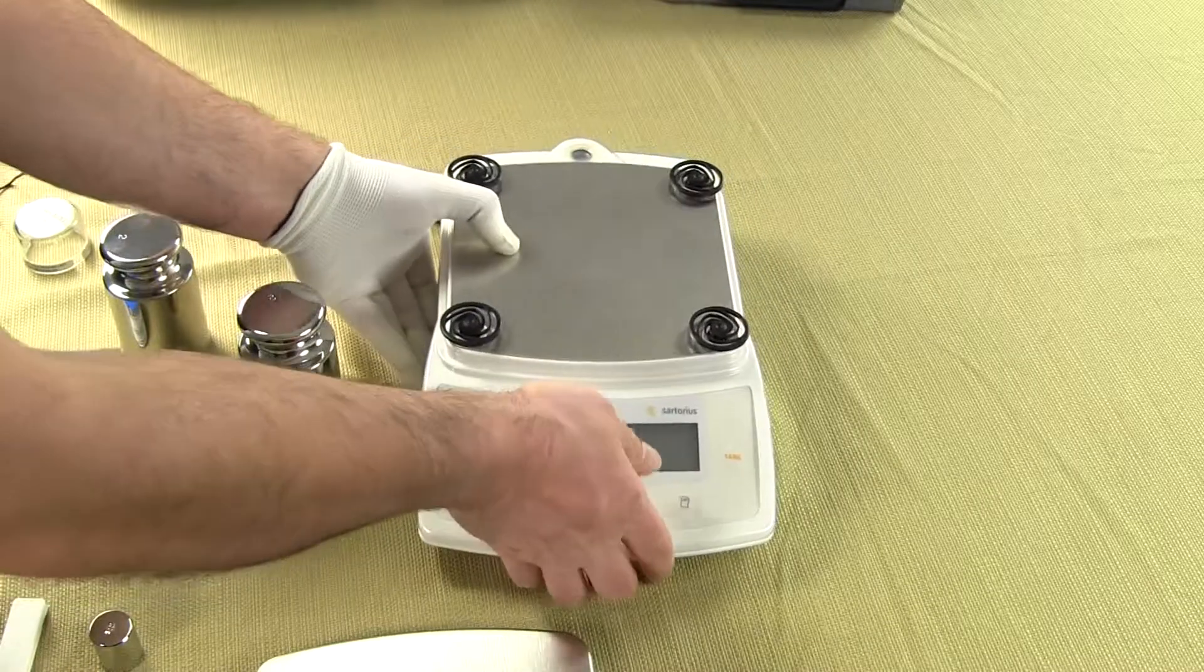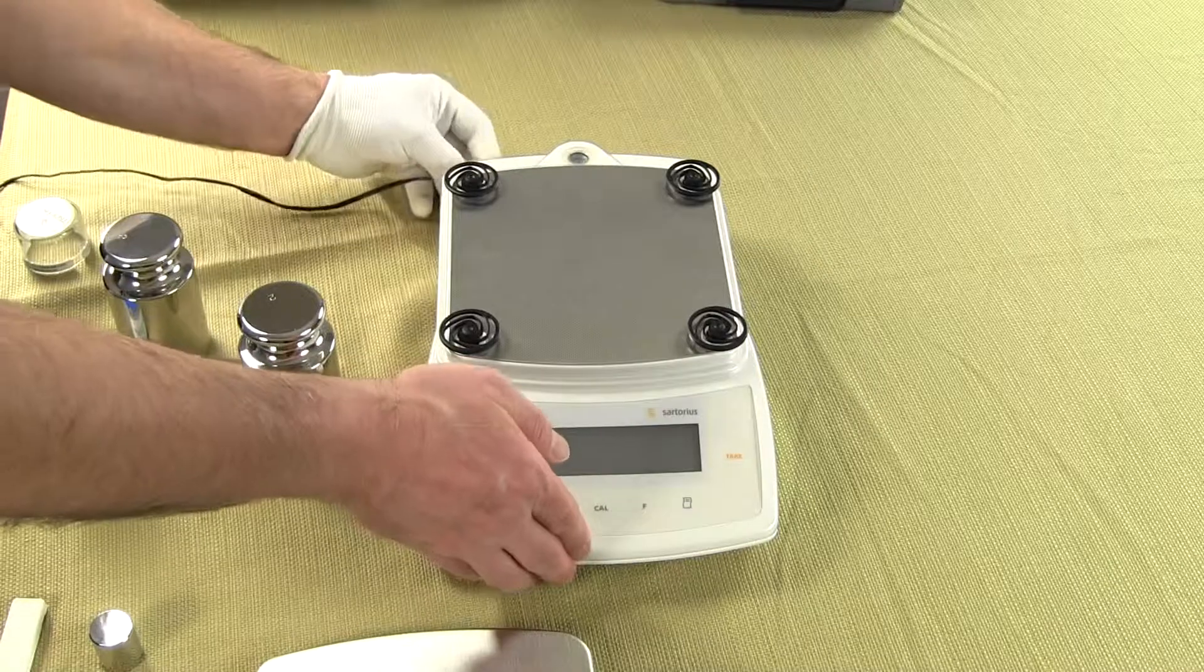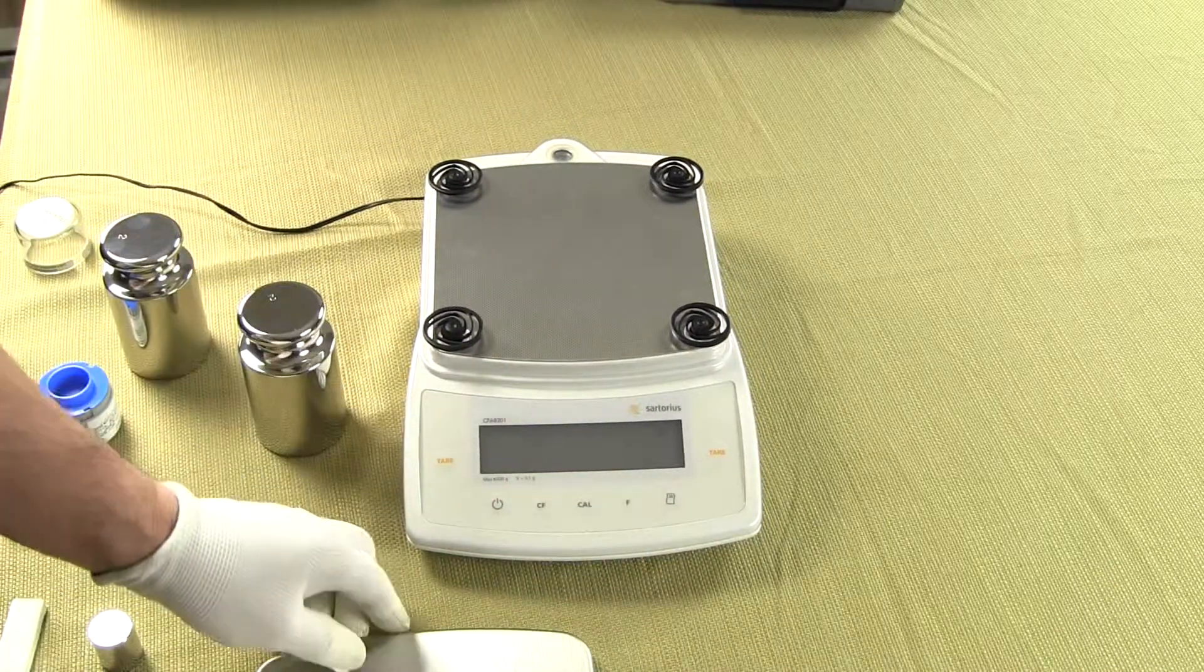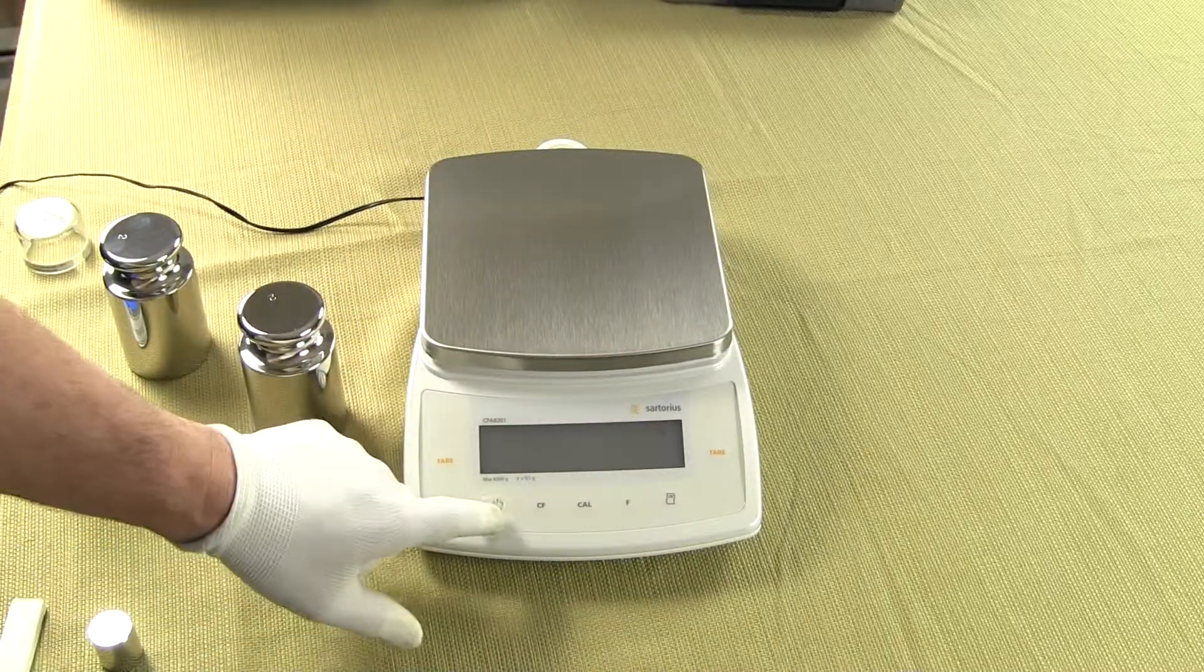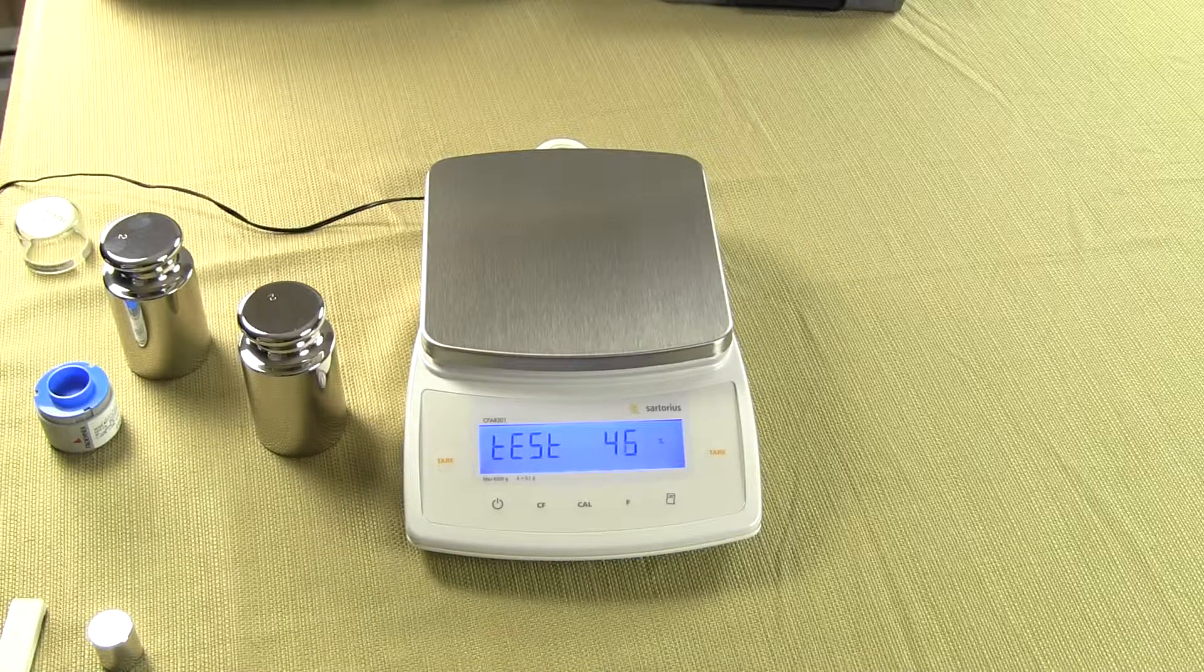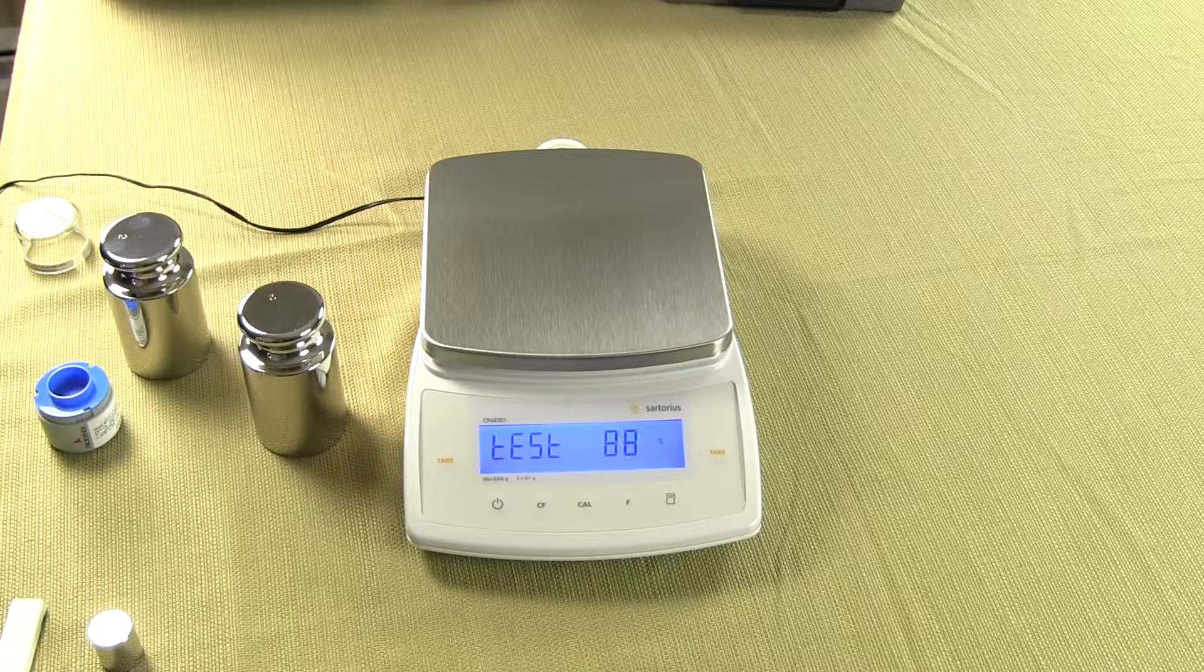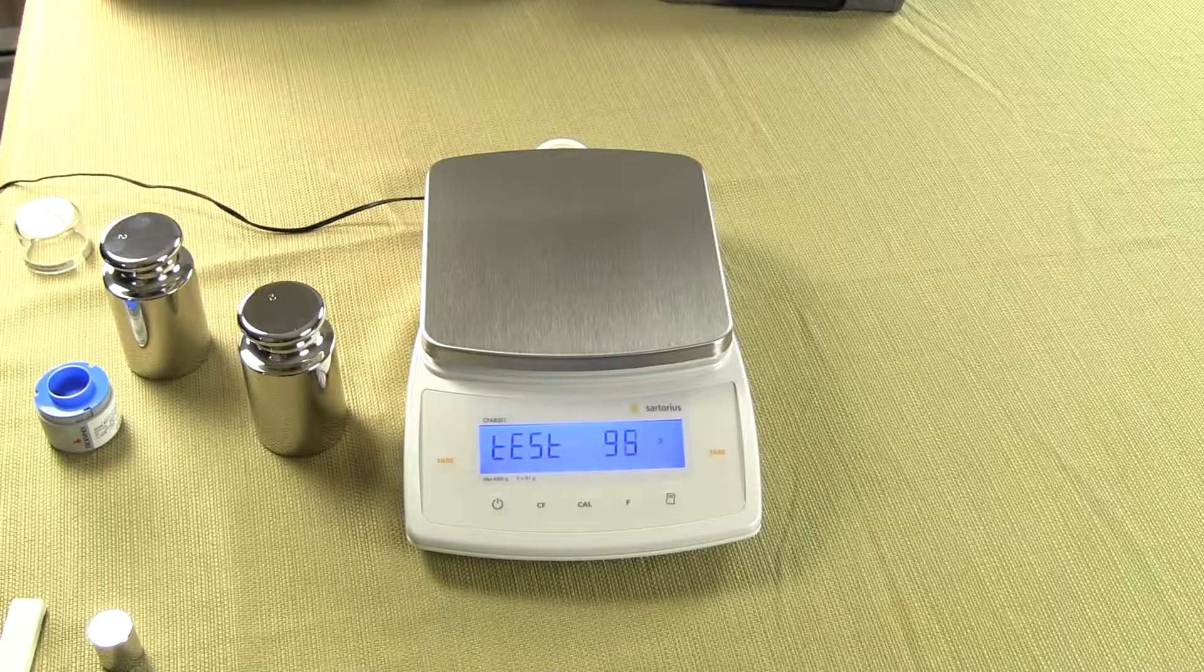So the balance is extremely simple and the CPA series for a tenth of a gram, this is the 8201. Sartorius also has another one called the CPA 5201 which is 5200 grams by a tenth of a gram, and then there's the CPA 10,000 grams by a tenth of a gram.